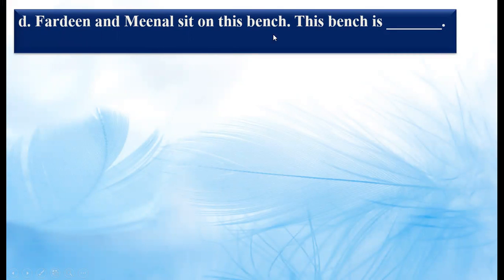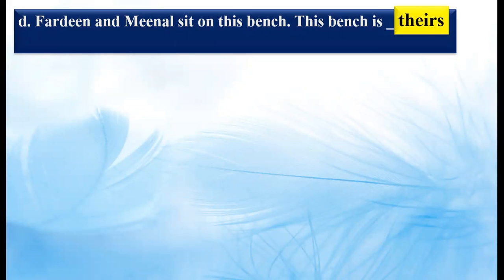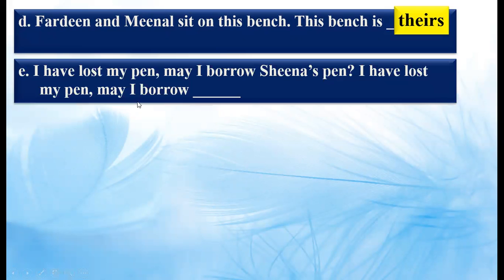Fardeen and Meenal sit on this bench. This bench is dash. Here Fardeen and Meenal are mentioned, so we write 'theirs', because the person telling us is not included. Next: 'I have lost my pen. May I borrow Sheena's pen?' — 'May I borrow dash?' Sheena is the name of a girl, so we'll write 'hers' as a possessive pronoun.